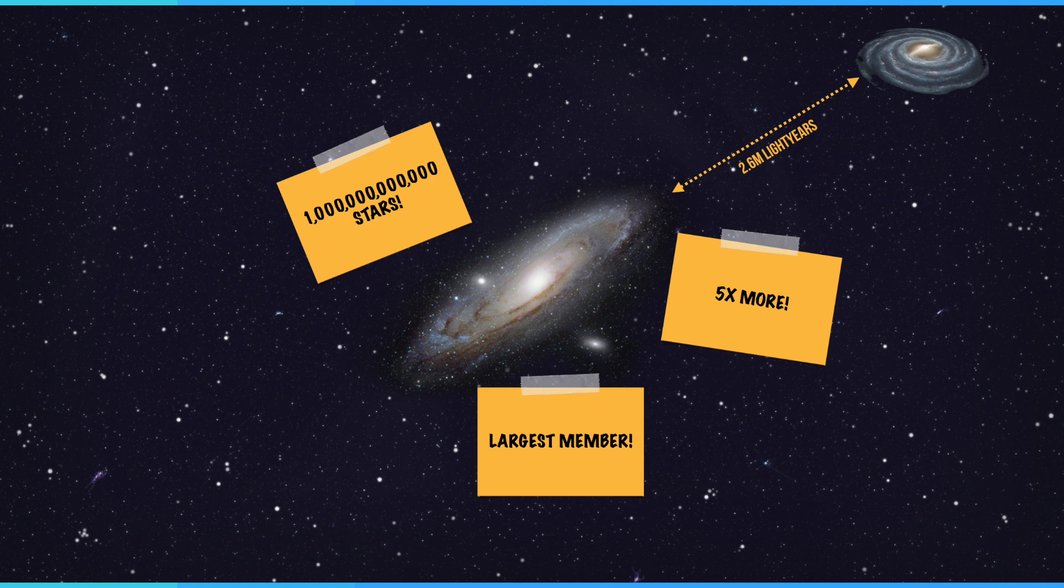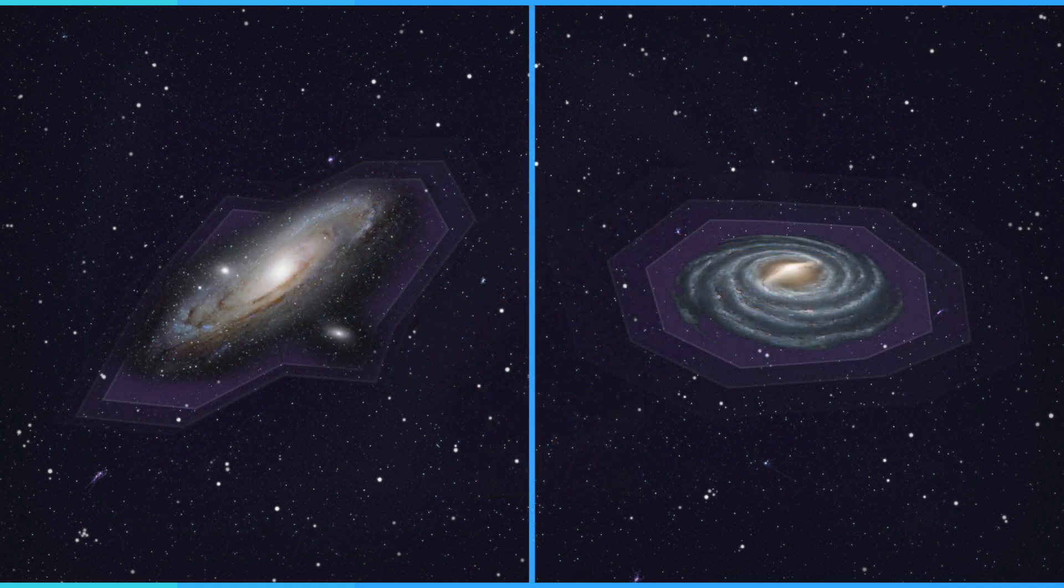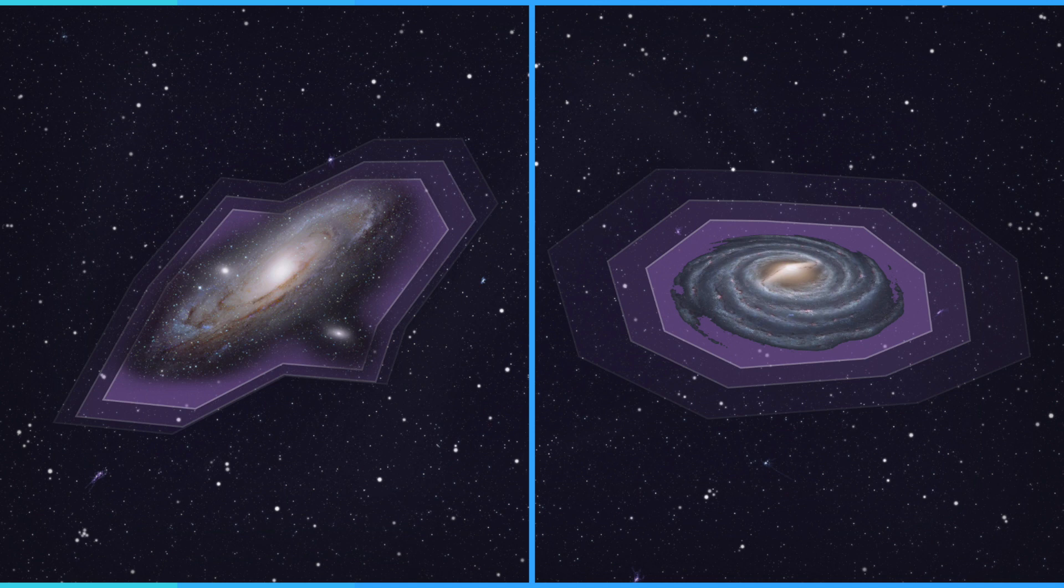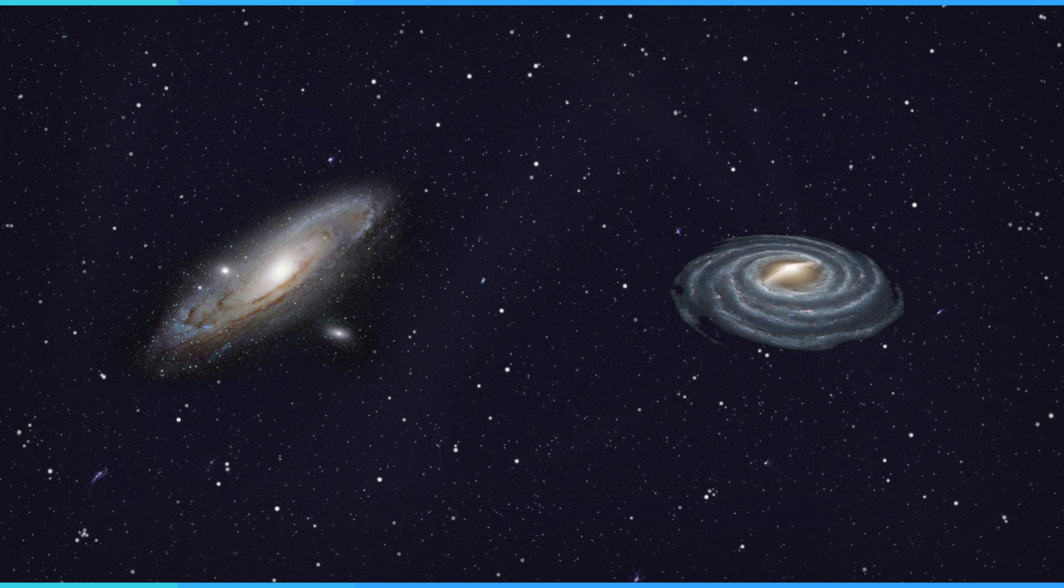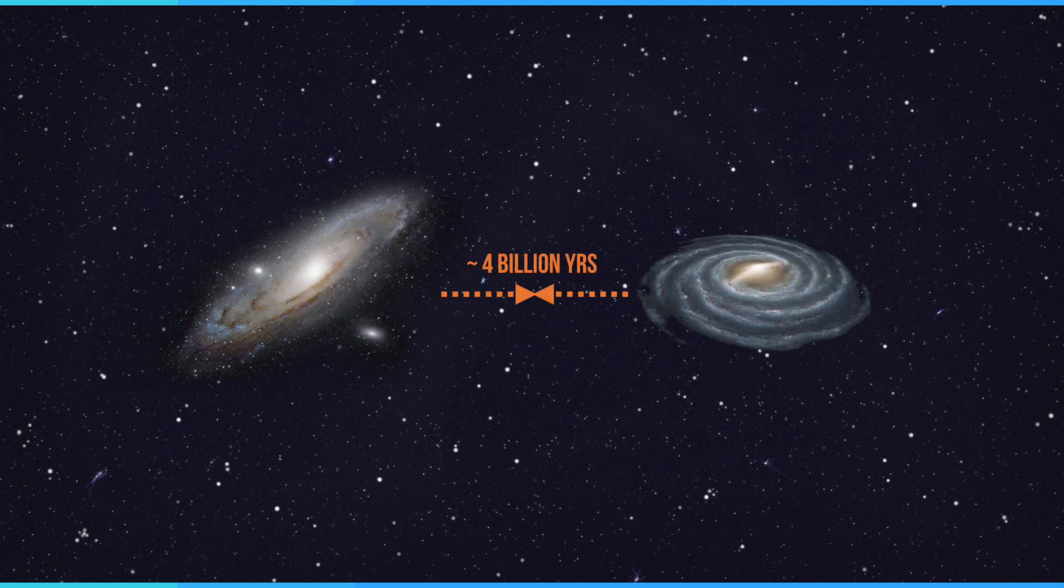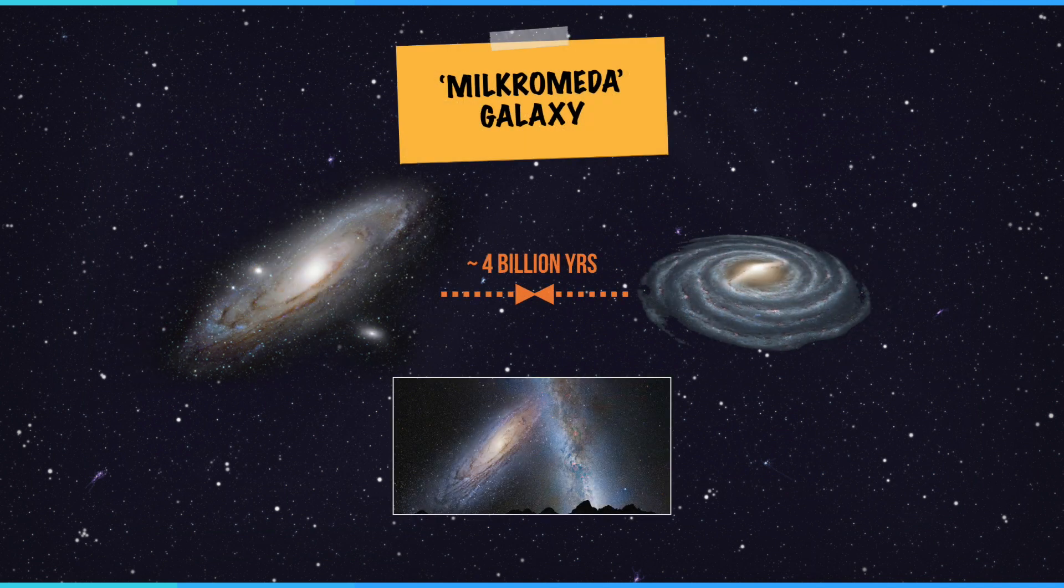But it may not be as massive as you think. Astronomers have shown that it contains less dark matter than the Milky Way. M31 is also one of very few galaxies approaching the Milky Way, and it will collide with us within 4 billion years.